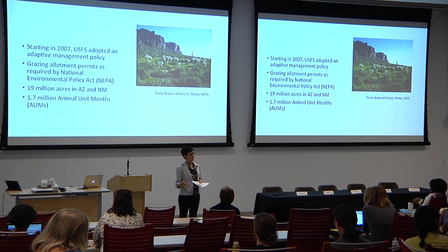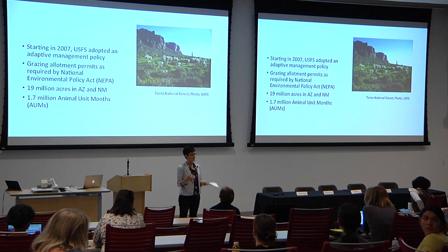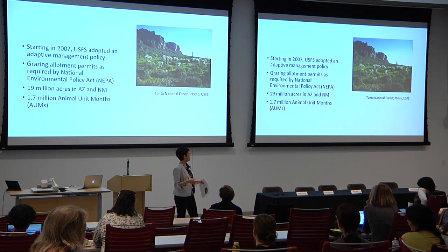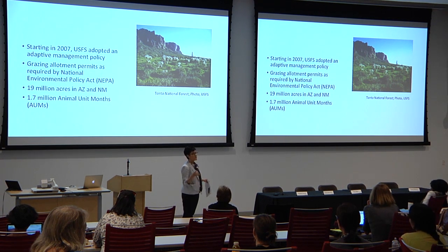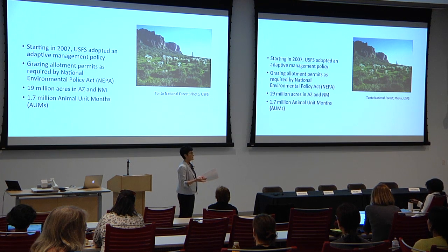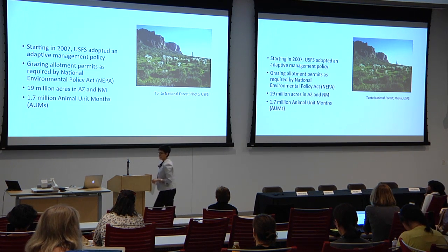This is a big experiment for the U.S. Forest Service to engage in, because they don't really have a lot of information about whether or not it works, and yet they've applied it to 19 million acres in Arizona and New Mexico, representing 1.7 animal units. The idea behind adaptive management is that as you undergo an ecosystem change — in this case, decreasing precipitation — the rancher will slowly start to decrease the number of animals being grazed on the land, so that when precipitation increases again, the land will be in good shape and they'll be able to put more cattle back on it.